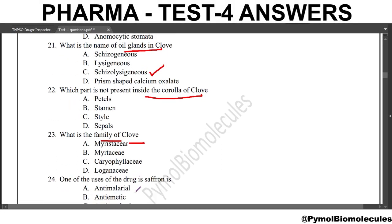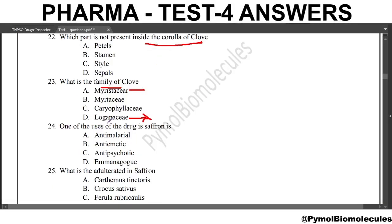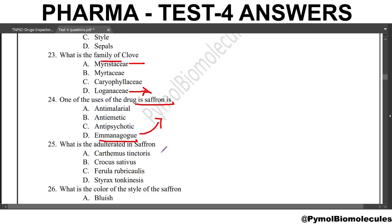In the comment section, you can mention what the Loganiaceae family drug is. One of the uses of saffron is as an emmenagogue. What is the meaning of emmenagogue? It increases or stimulates menstrual flow. So emmenagogue is the use of saffron.